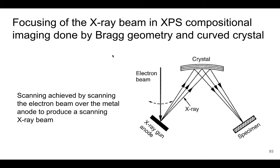Here is a way we can actually focus the x-ray beam for XPS — it's basically using a curved crystal. We use diffraction with a curved crystal which can focus a divergent beam onto the specimen, but again there are limitations to how much we can do here. That's how XPS compositional mapping would be done.